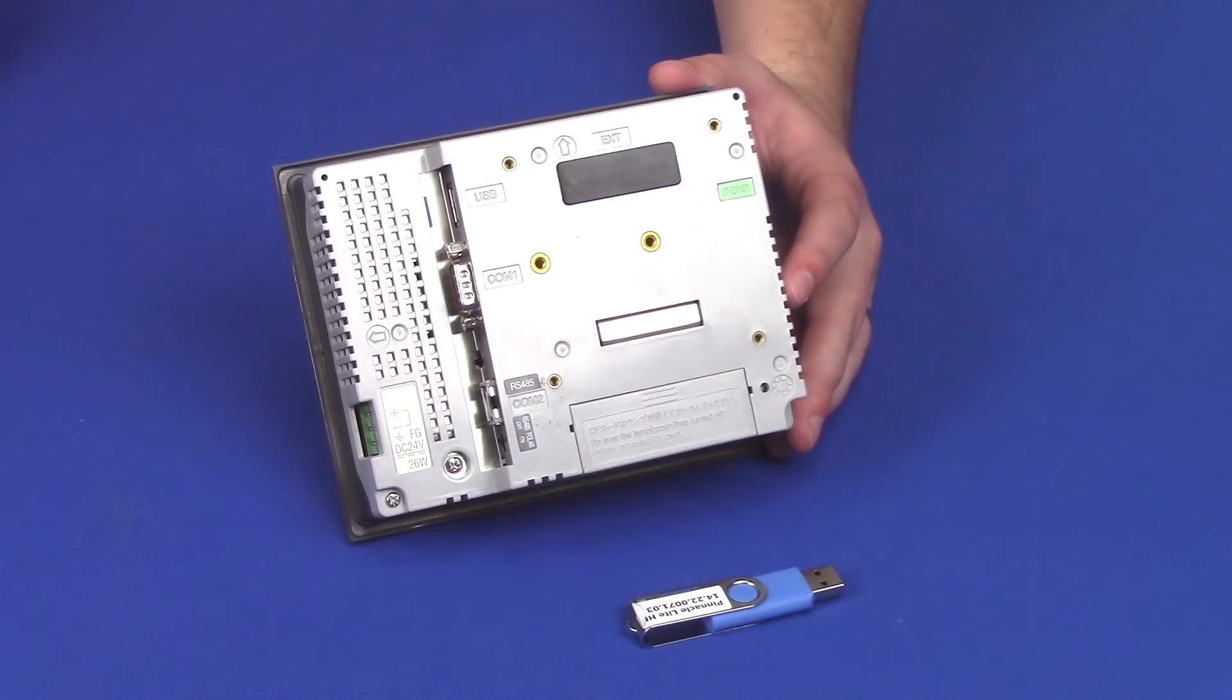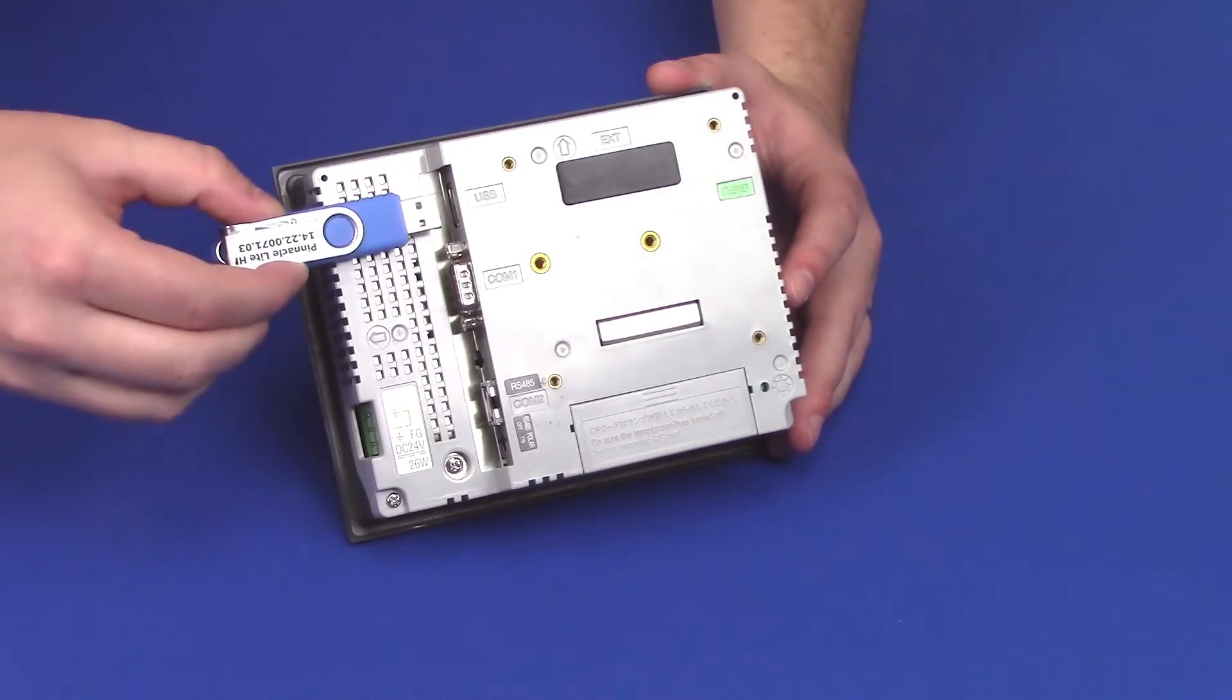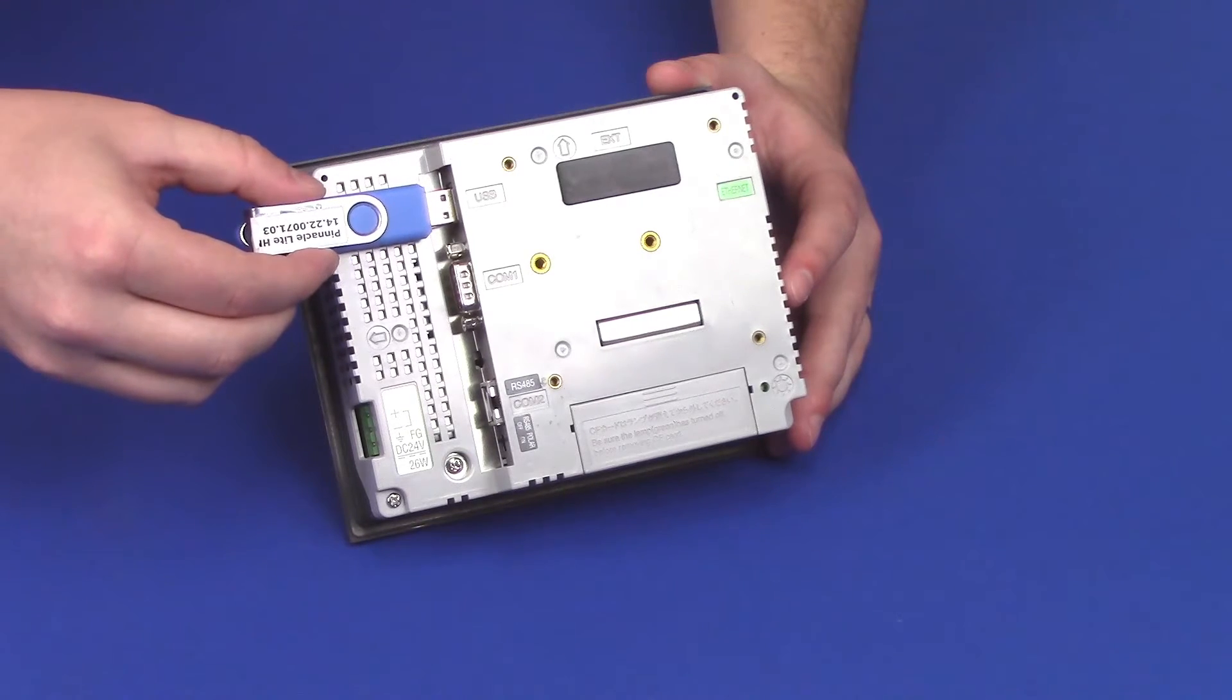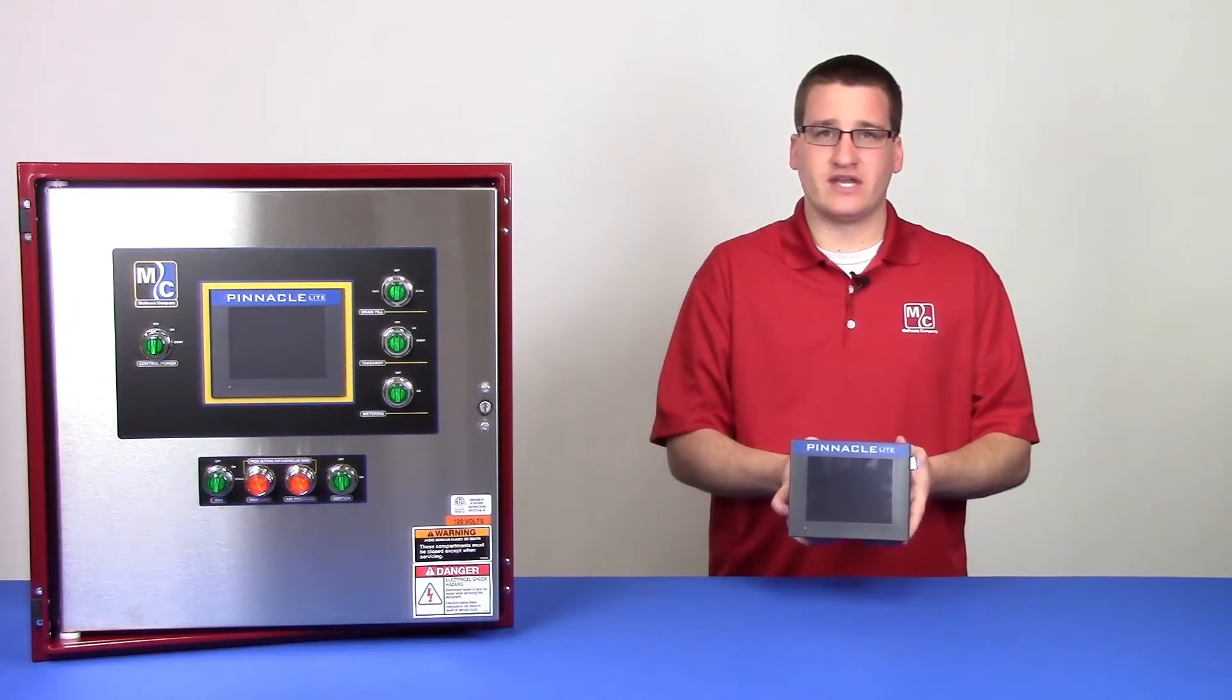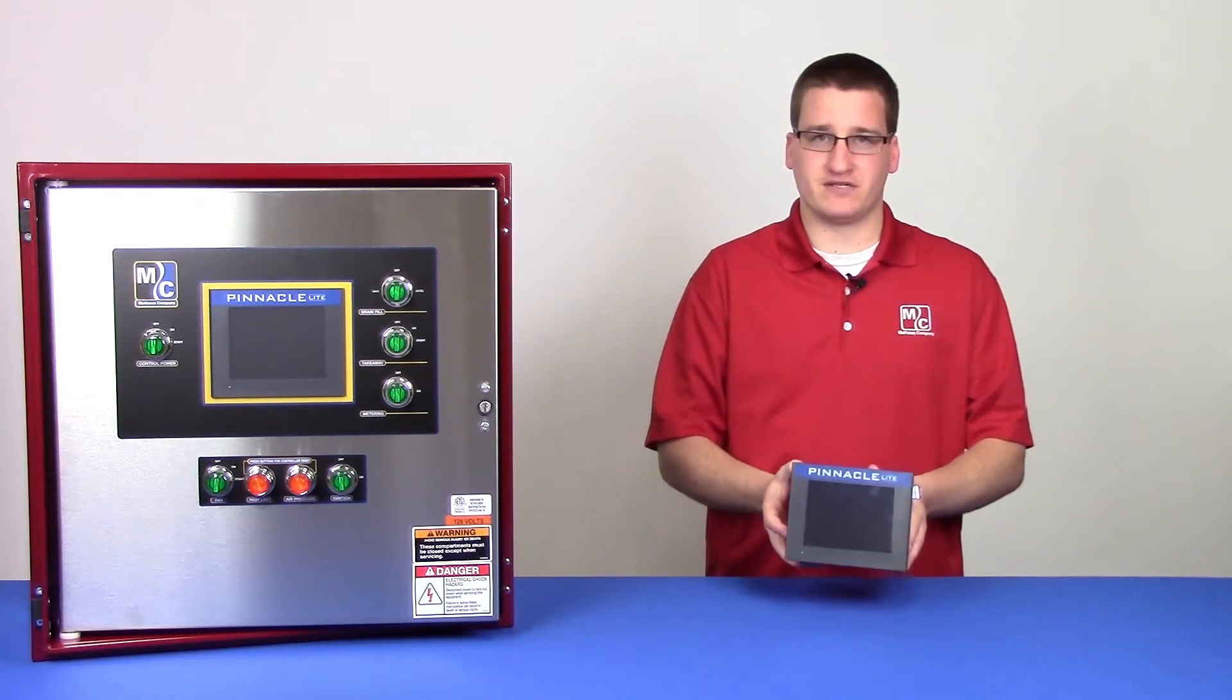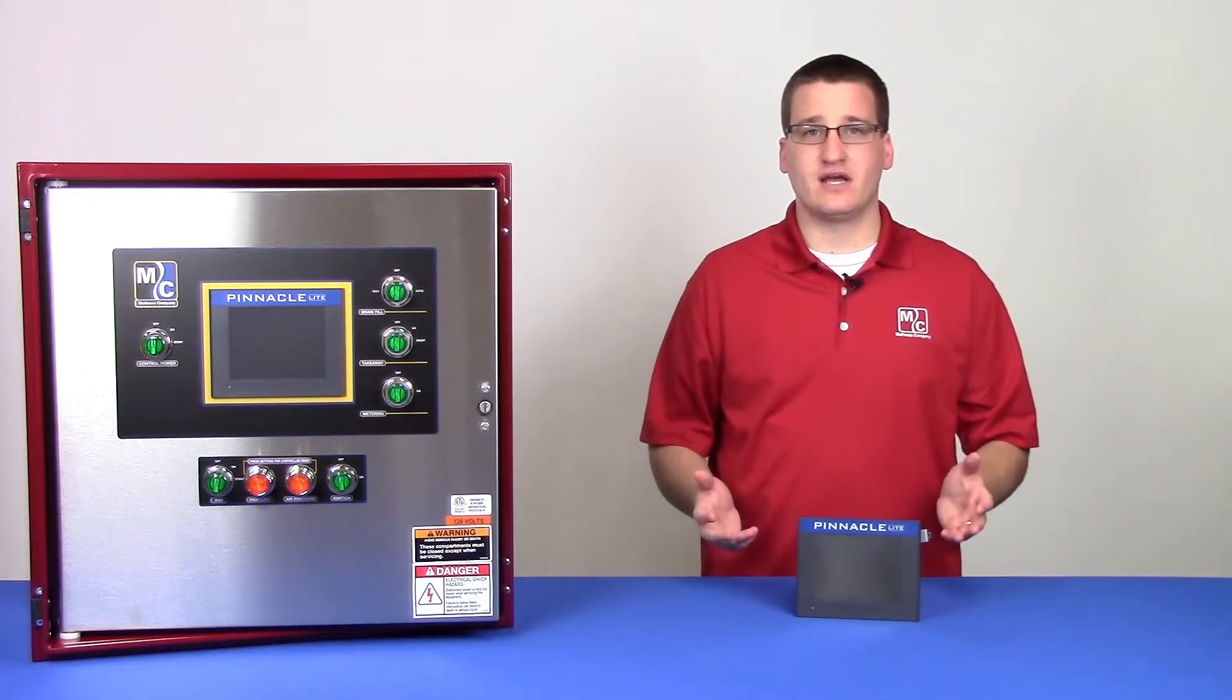In the top corner, you'll see there's a USB port. Insert the USB stick that we've provided into this port. Now if you look at the front of the HMI, you'll notice that a pop-up has appeared. Go ahead and hit the restart button. This will begin the update.